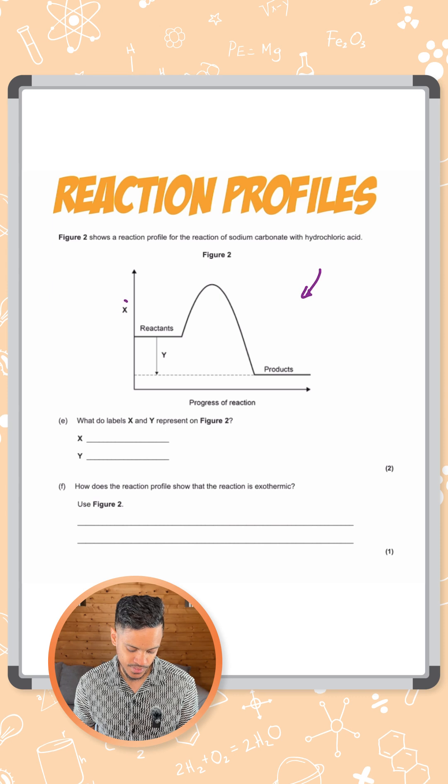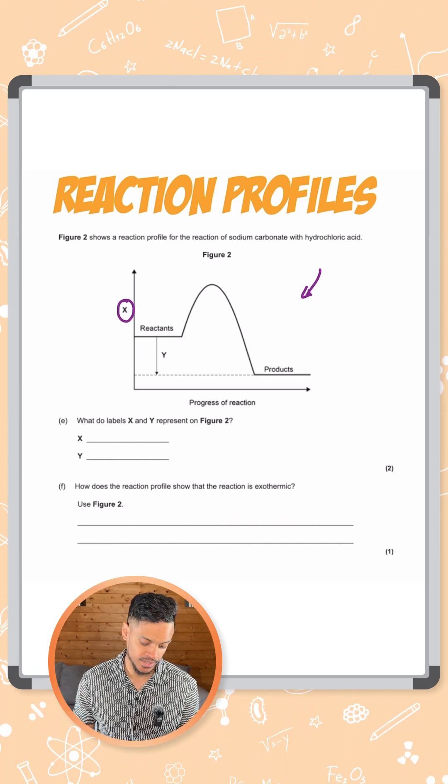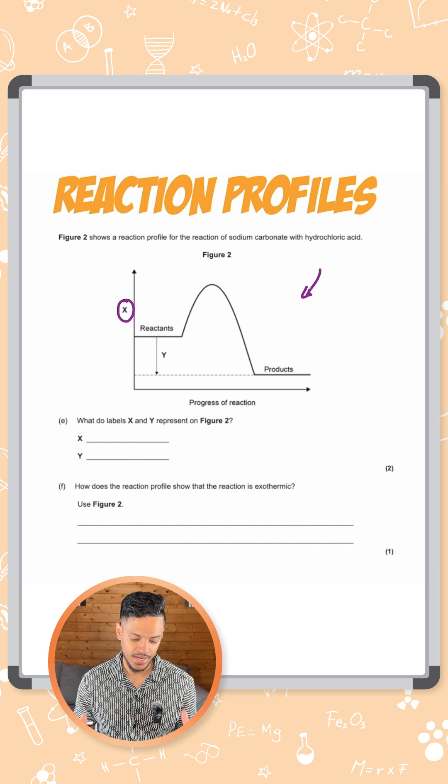What do labels X and Y represent? So X is actually the Y axis. What label is that?